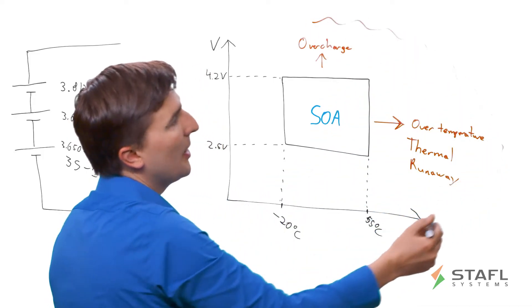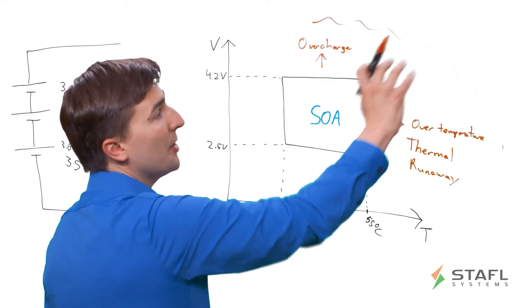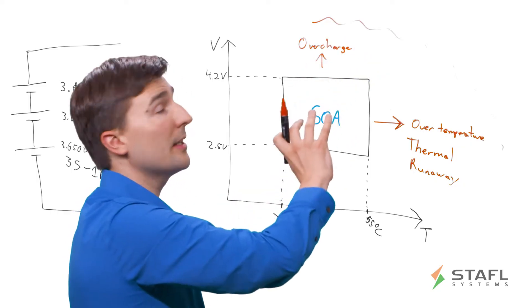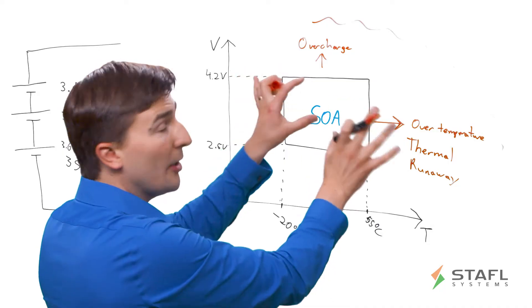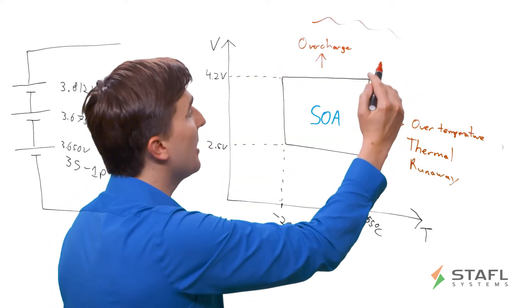And so both of these areas, this entire region here, denoted by the red, is a dangerous area where you can get fire, explosion, venting, other problems you definitely want to avoid. So the BMS very much needs to prevent cells from getting outside of this area.